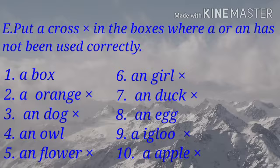Number 3, an dog — incorrect, so cross. Number 4, an owl — correct. Number 5, an flower — incorrect, so children, you have to give a cross mark on your book.